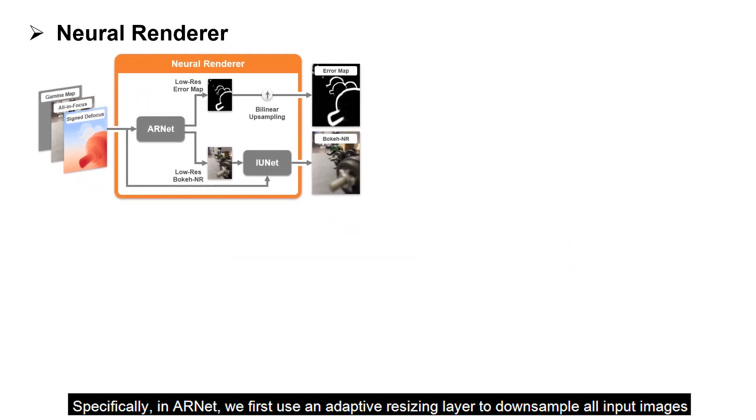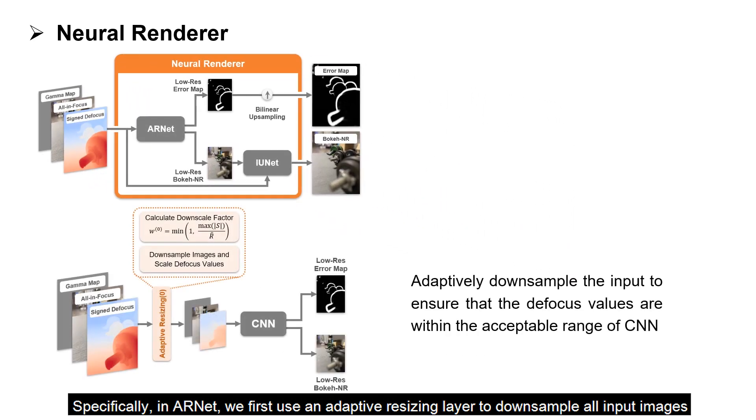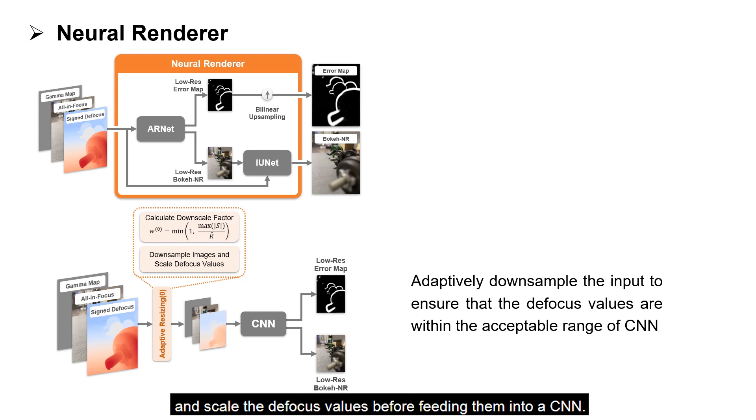Specifically, in ARNet, we first use an adaptive resizing layer to downsample all input images and scale the defocus values before feeding them into a CNN. The reason is that the actual defocus range is unlimited and may exceed the acceptable range of the network.